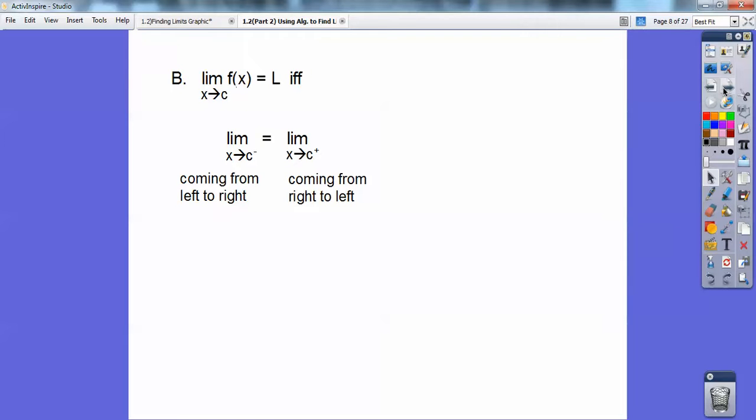The limit as x approaches c of f(x) equals some number L. This means if and only if, if you haven't seen that, if the limit coming from the left, that's what this little minus sign means, is equal to the limit coming from the right. It doesn't even have to be defined, or it could be a whole. I showed you an example where L was, where the numeric answer was different at c, but coming from the left and coming from the right, they approached the same number. As long as they approach the same number, that's what your limit is right there.